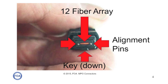MPO connectors are also keyed. The key is there because when you mate two connectors, you have 12 fibers in one connector that have to mate with 12 fibers in another connector. So if you think of it as one has fibers 1 to 12 and the other has fibers 1 to 12, do they meet 1 to 1 and 12 to 12, or do they meet 12 to 1 and 1 to 12?